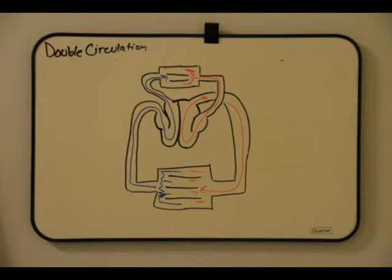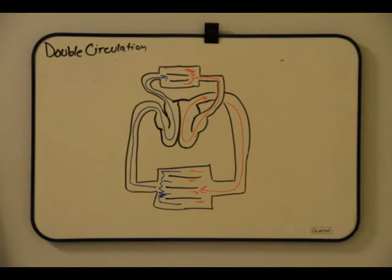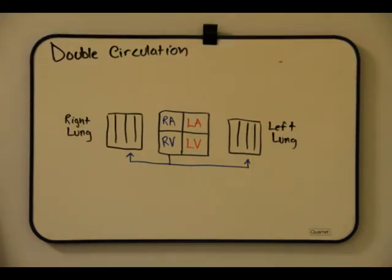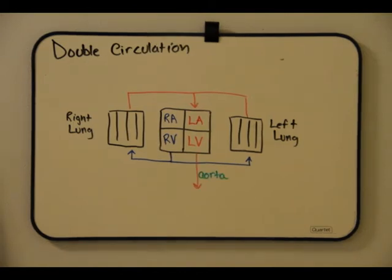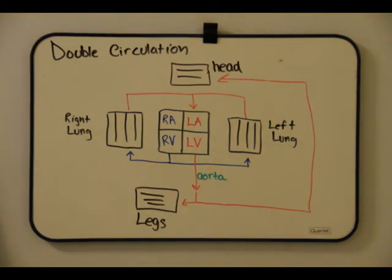Double circulation in mammals depends on the anatomy and pumping cycle of the heart. In the mammalian circulatory system, blood starts in the right ventricle and is pumped into the pulmonary arteries where it meets the lungs. In the lungs, it picks up oxygen-rich blood and then continues back to the left atrium, and then is pumped into the left ventricle, which pumps the oxygen-rich blood into the aorta, which then divides to go to the arms or the legs.